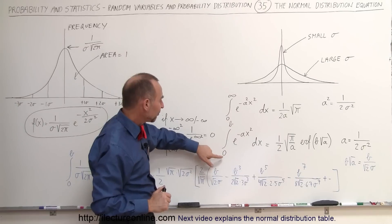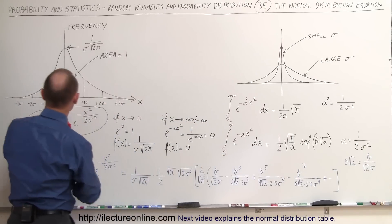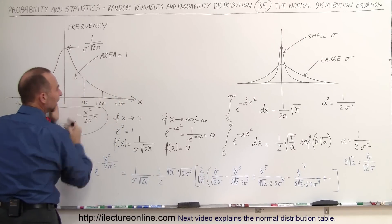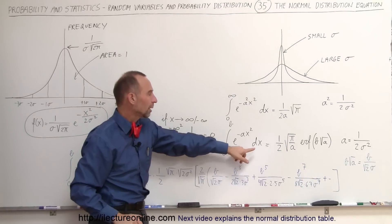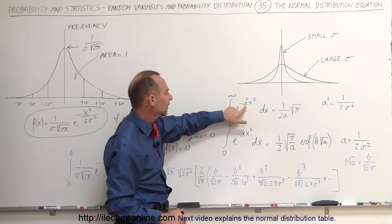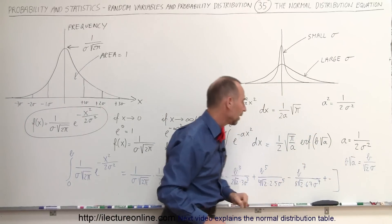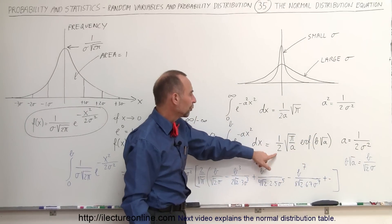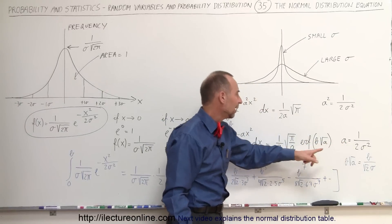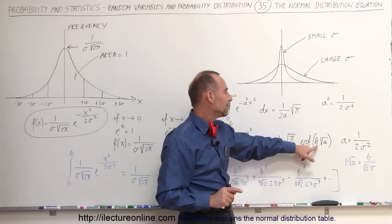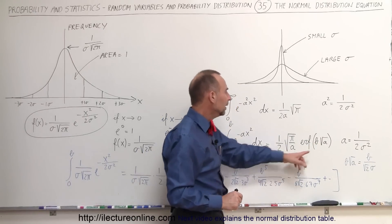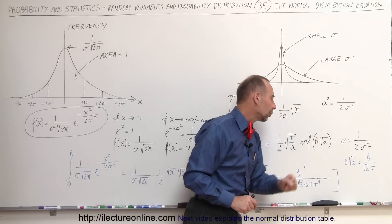If we want to integrate from 0 to b — from the center to any point to the right, not infinity but some finite point — the solution becomes a little different. The general equation has a here instead of a squared, where a equals 1 over 2 sigma squared. The solution is 1 over 2 times the square root of pi divided by a, times what we call the error function of b times the square root of a, where b is the limit of integration.